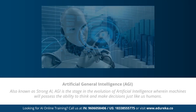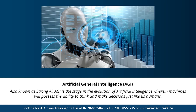Artificial general intelligence, also known as strong AI, is the next stage — the evolution of artificial intelligence wherein machines will possess the ability to think and make decisions just like human beings. There are currently no existing examples of strong AI, but it's believed we will soon be able to create machines as smart as humans. Strong AI is considered a threat to human existence by many scientists, including Stephen Hawking, who quoted that the development of full artificial intelligence could spell the end of the human race.